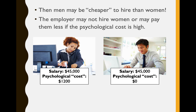There's some psychological cost associated with hiring a group of people that this employer doesn't like — in this example, women. So they're going to add that psychological cost to the individual's salary, to whatever they feel like they're going to have to pay the individual to work there. The employer may not hire women or may pay them less if the psychological cost of hiring a woman is high. Here we have an example where the psychological cost of hiring this woman is an additional $1,200. This is the general idea of economists putting dollar values on things that are hard to quantify.